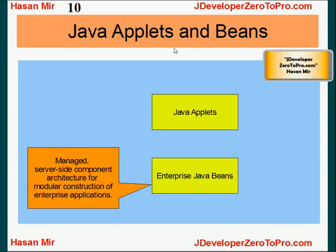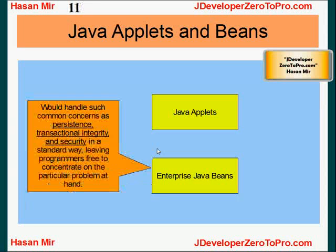Enterprise Java Beans provide managed server-side component architecture. You can think of Enterprise Java Beans as taking the burden from the programmer related to persistence, transaction integrity, and security, so that the programmer can focus on the problem at hand.